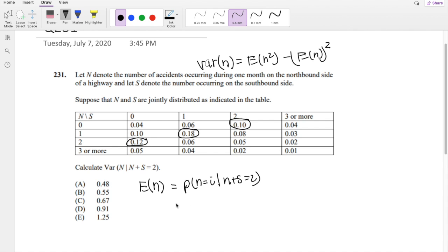Alright, as always, the conditional probability could be broken down into P of n equals i comma n plus s equals 2, over the probability that n plus s equals 2.